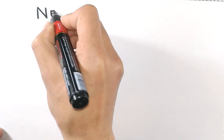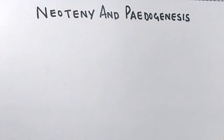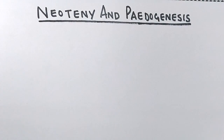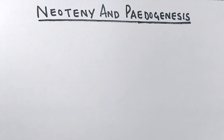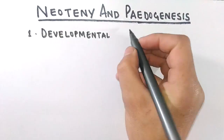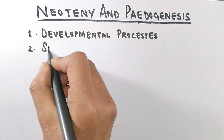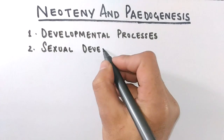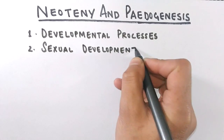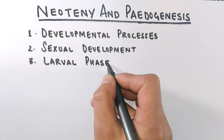In this video we will talk about neoteny and pedogenesis. These are two processes that we encounter during developmental biology. Both these terms are related to the developmental process — specifically sexual development — and we always attribute these terms to the larval phase of an organism.